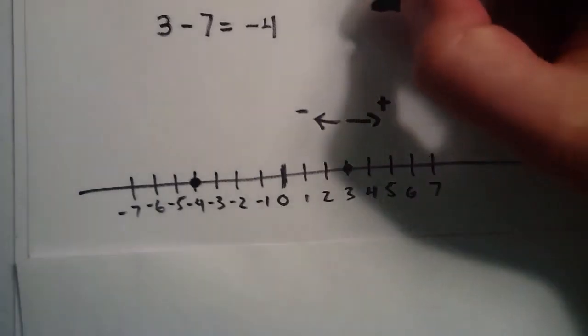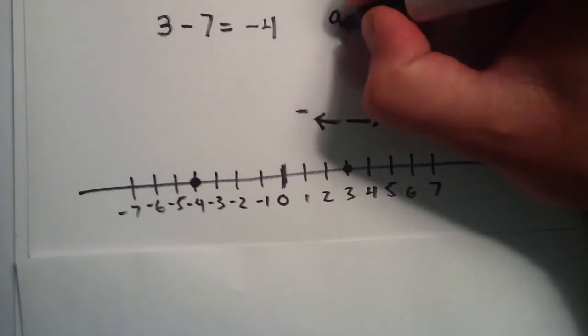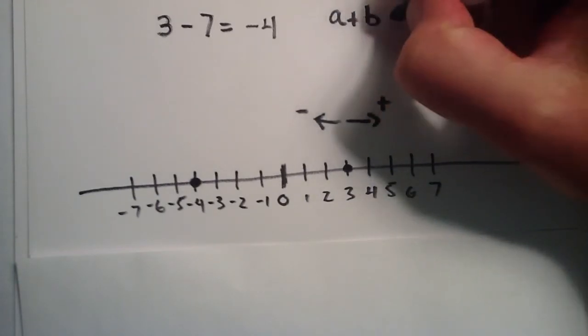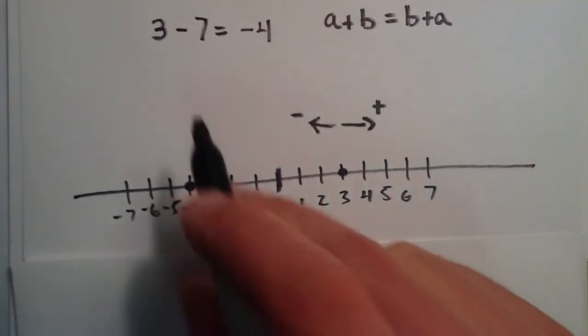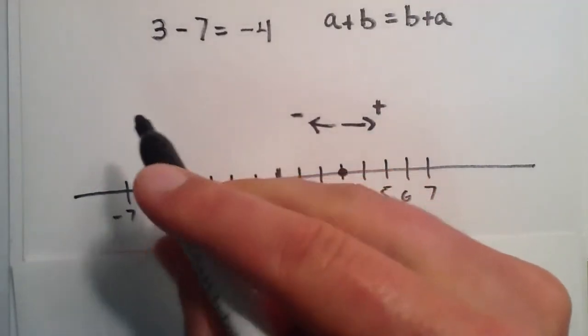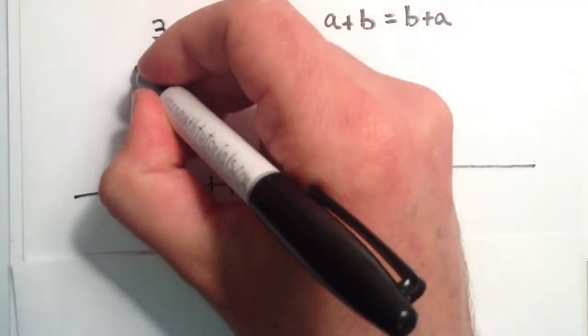Now if you remember, the commutative property of addition tells us that a number plus another number is the same thing as the second number plus the first number. So in our case, our first number is a positive 3.